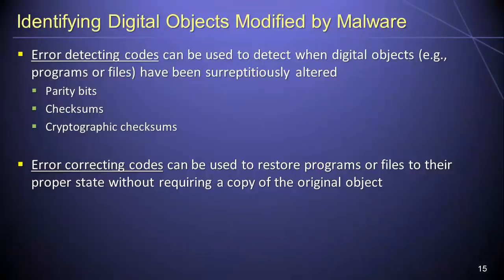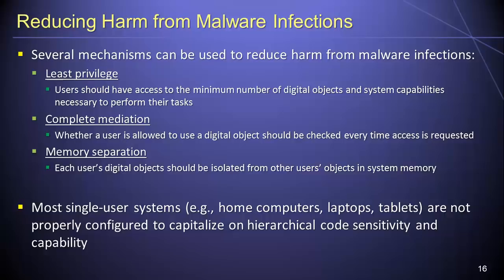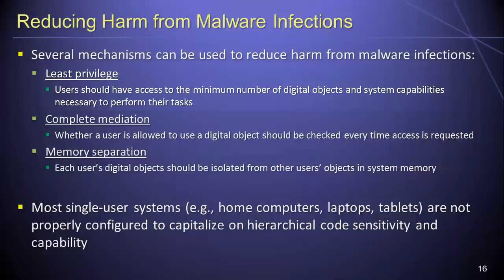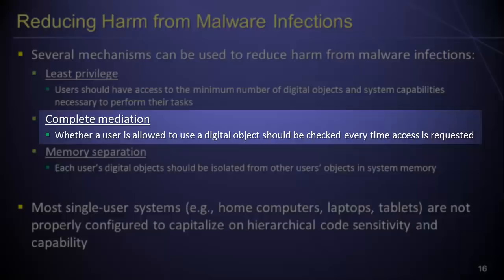In addition to checking whether digital objects have been surreptitiously modified, there are also several mechanisms that can be used to reduce or contain the harm caused by a malware infection. First among these is the principle of least privilege, which states that users should have access to the minimum number of digital objects and system capabilities necessary to perform their tasks. A malware program that runs with the authority of a system administrator has the potential to cause much more harm than if the same malware program were run with the authority granted to a low-level user account. Second is the principle of complete mediation, which states that we should check whether a user is allowed to use a digital object each and every time that access is requested.